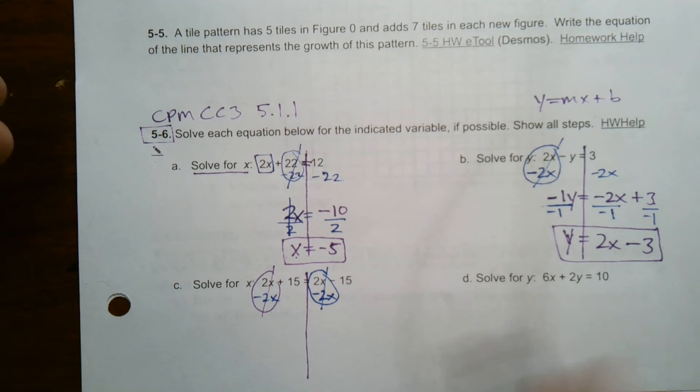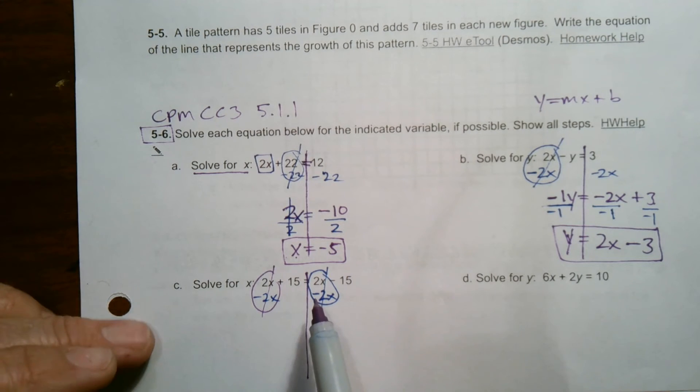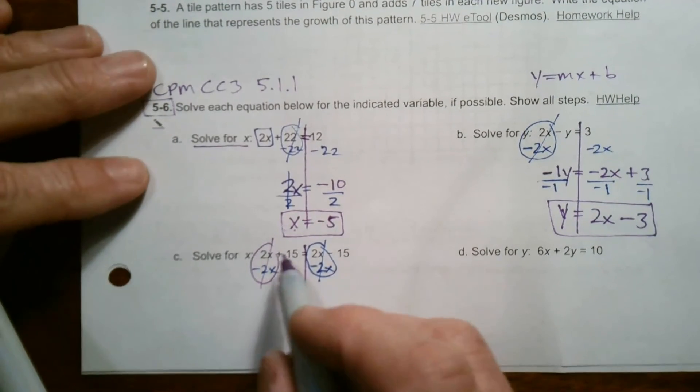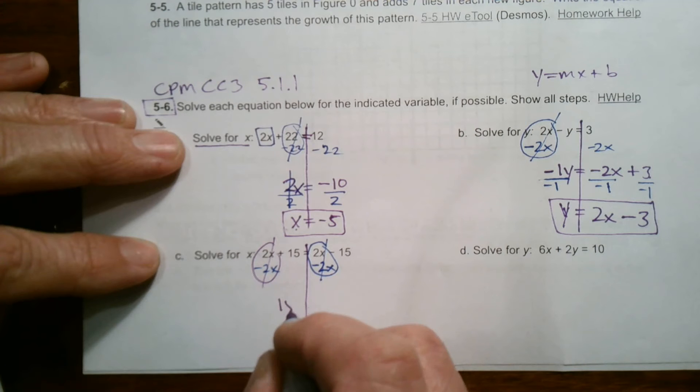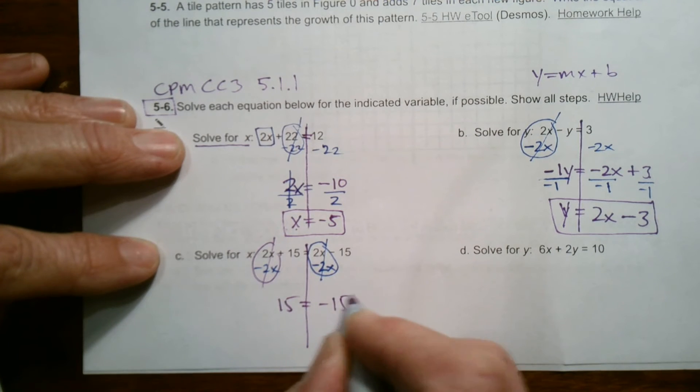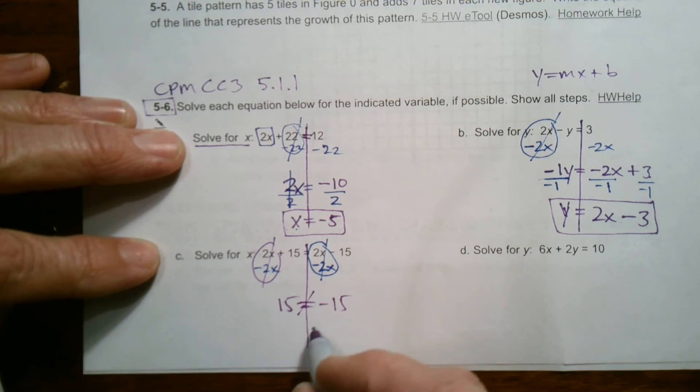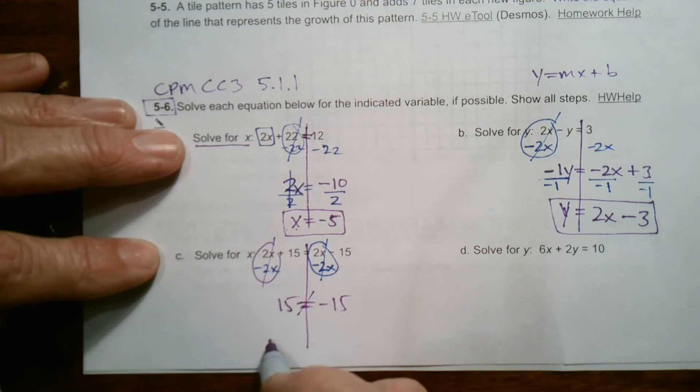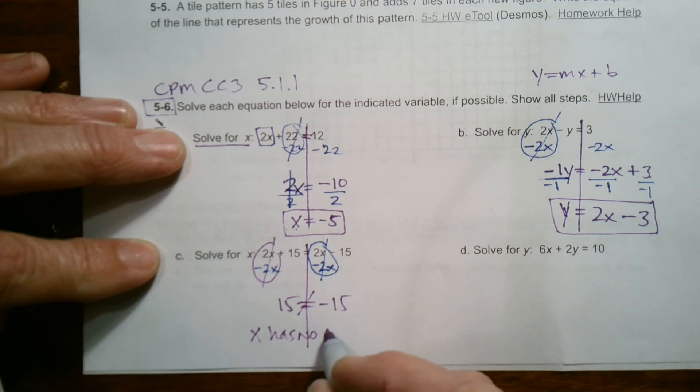So I look to see what's left. I have this 15 on one side and negative 15 on the other. Is that a true statement? No, they're not equal. So therefore this means that x has no solution. X has no solution.